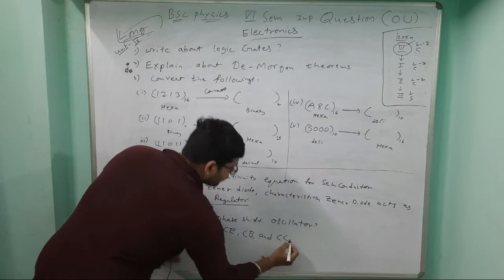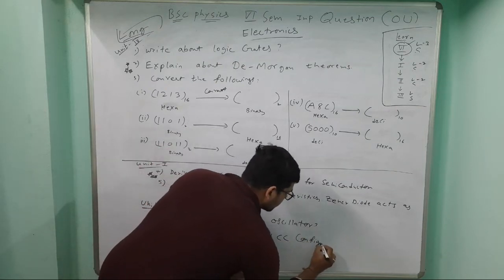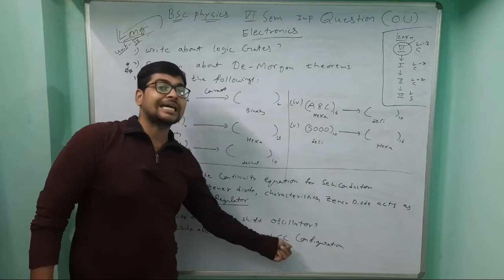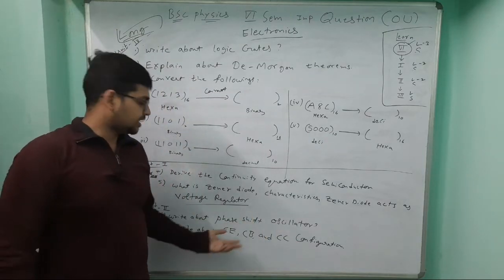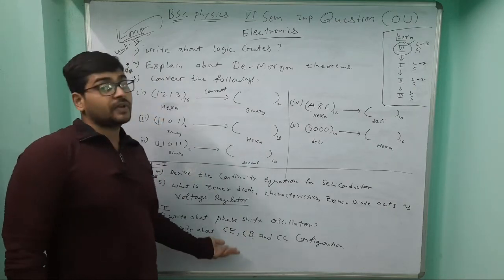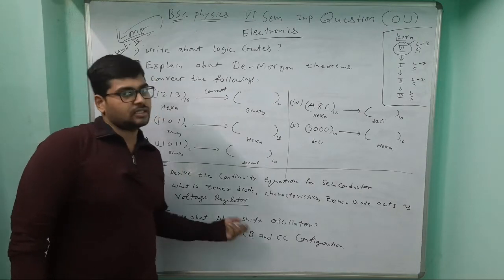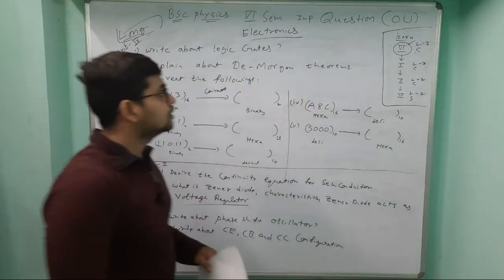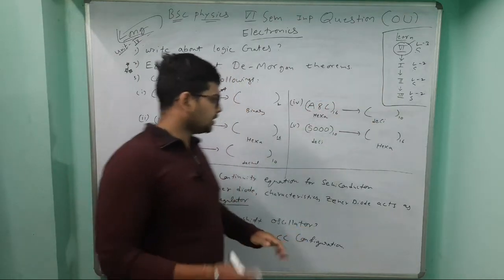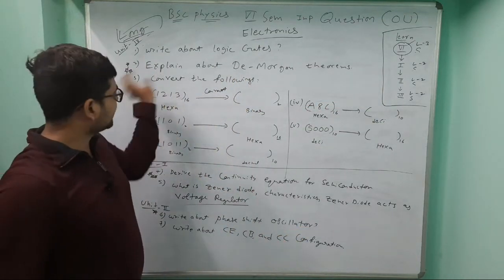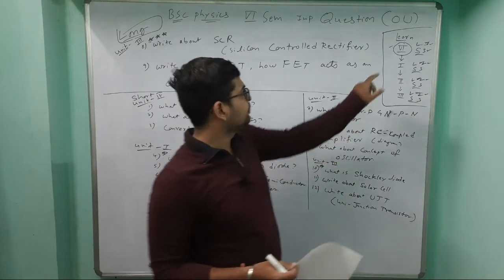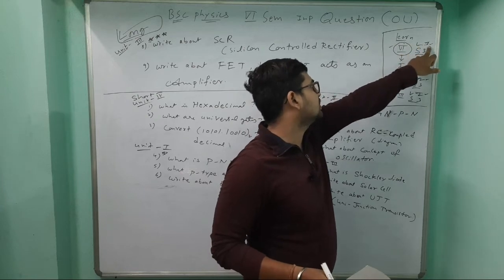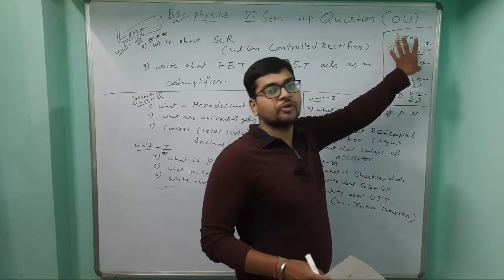Seventh question: CE, CB, and CC configurations - common emitter, common base, and common collector configurations. Diagram is very important here. Wherever common is there, that will be connected to earth. I'm giving two questions for each unit - three questions here, two questions there, two questions there.